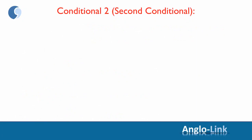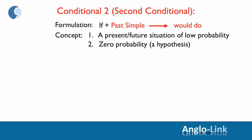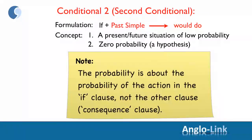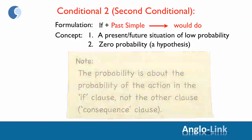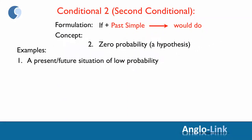Moving on to second conditional. The formulation is: if plus past simple, would do. The concept of the second conditional deals with either a present or future situation of low probability, zero probability, a hypothesis, or an unreal situation. Note that the probability is about the probability of the action in the if clause, not the consequence clause. Let's look at some examples of a present or future situation of low probability.